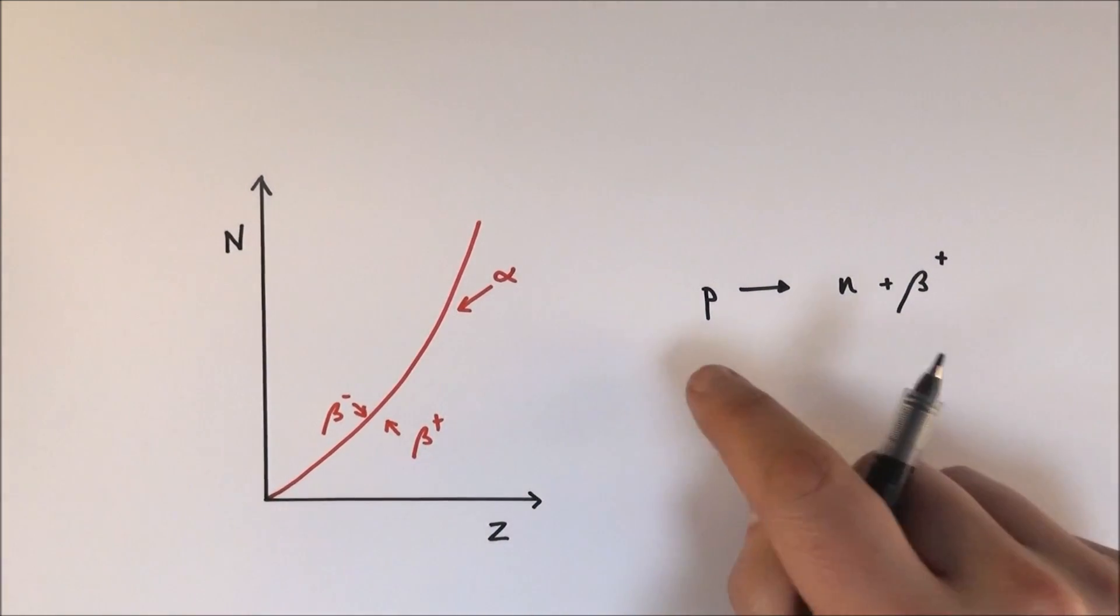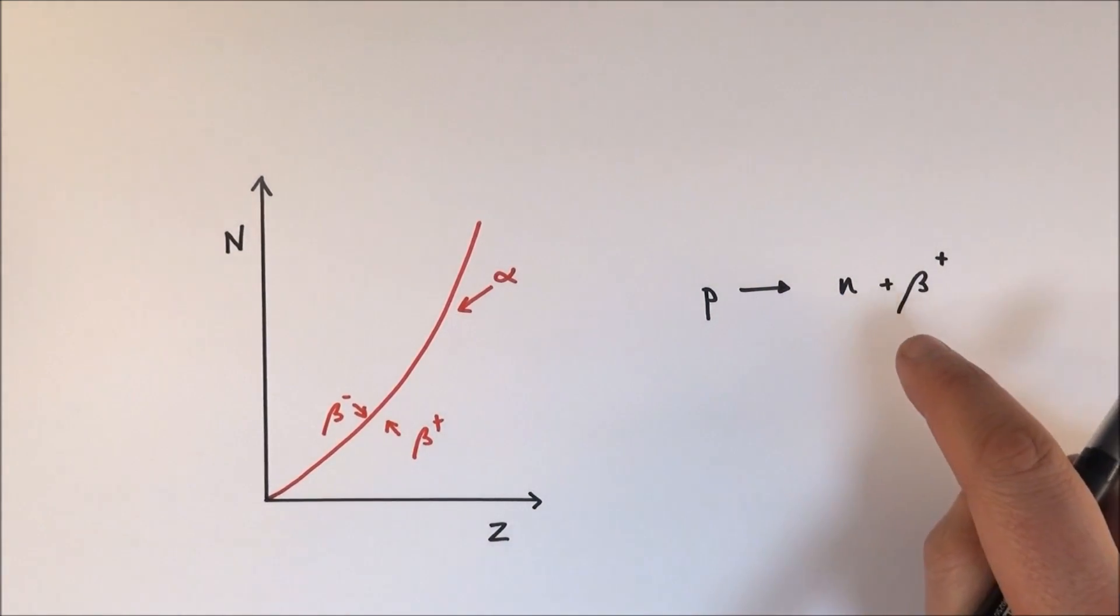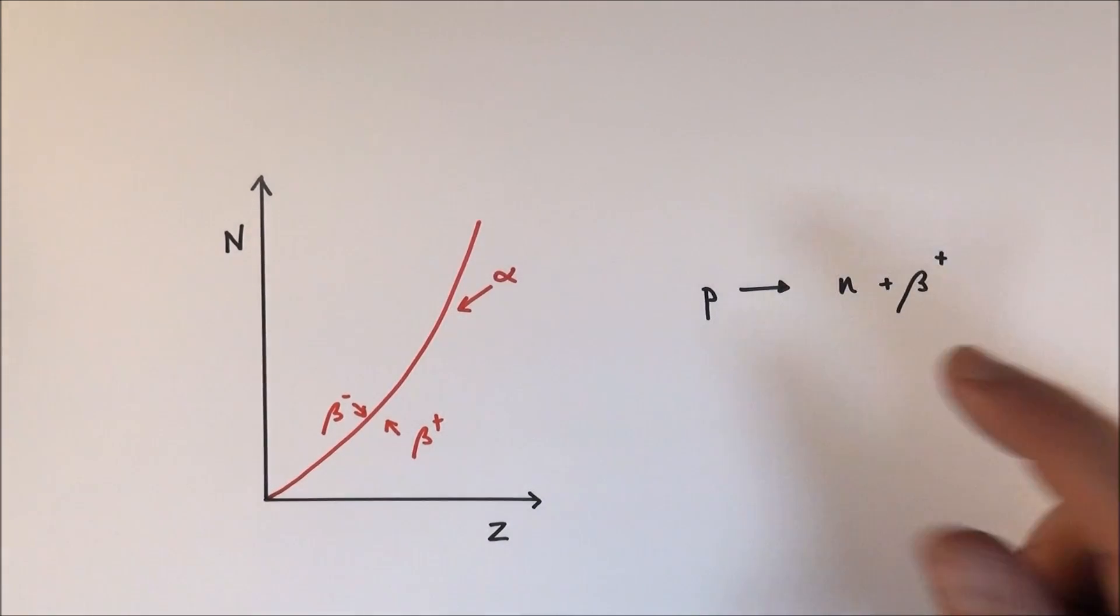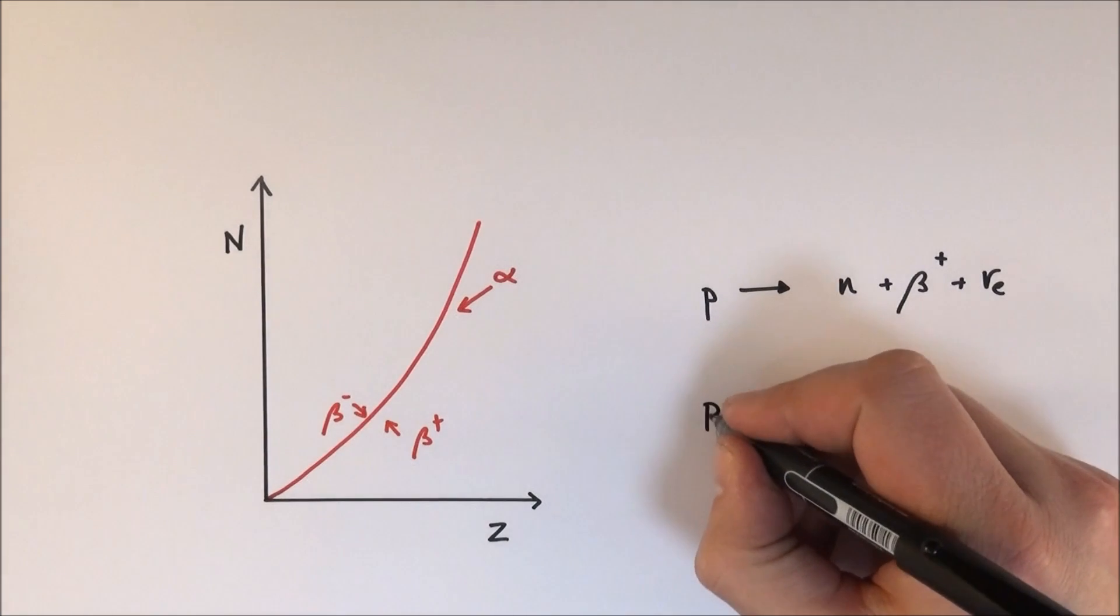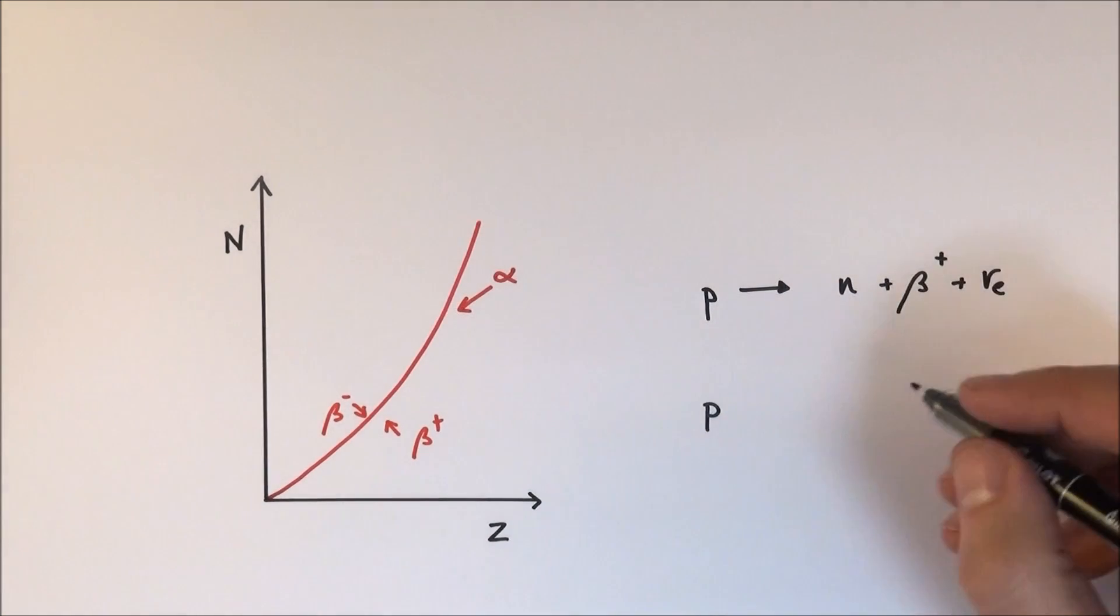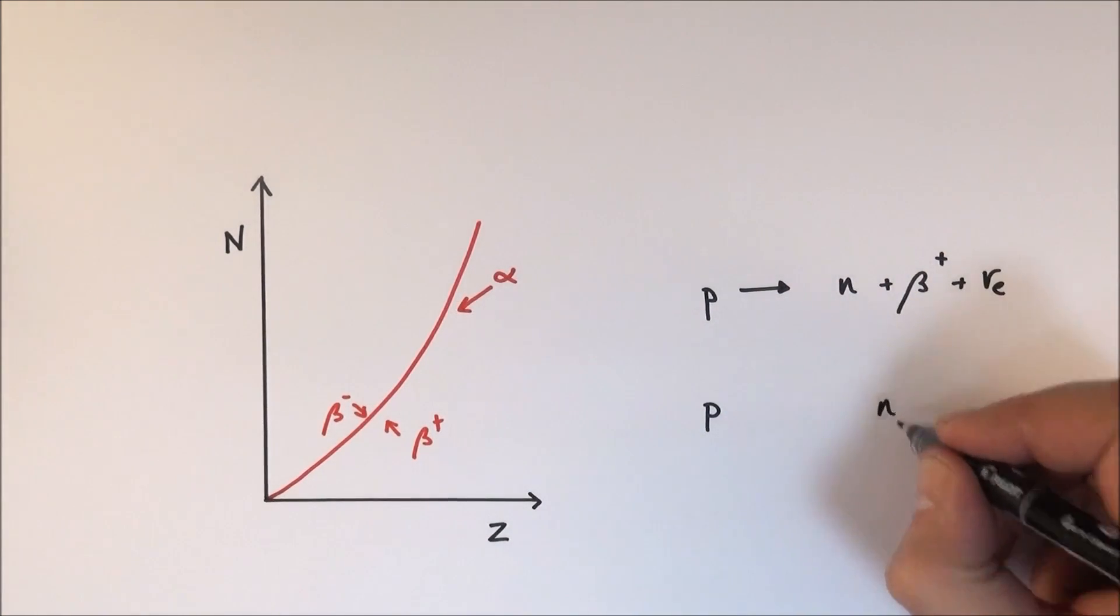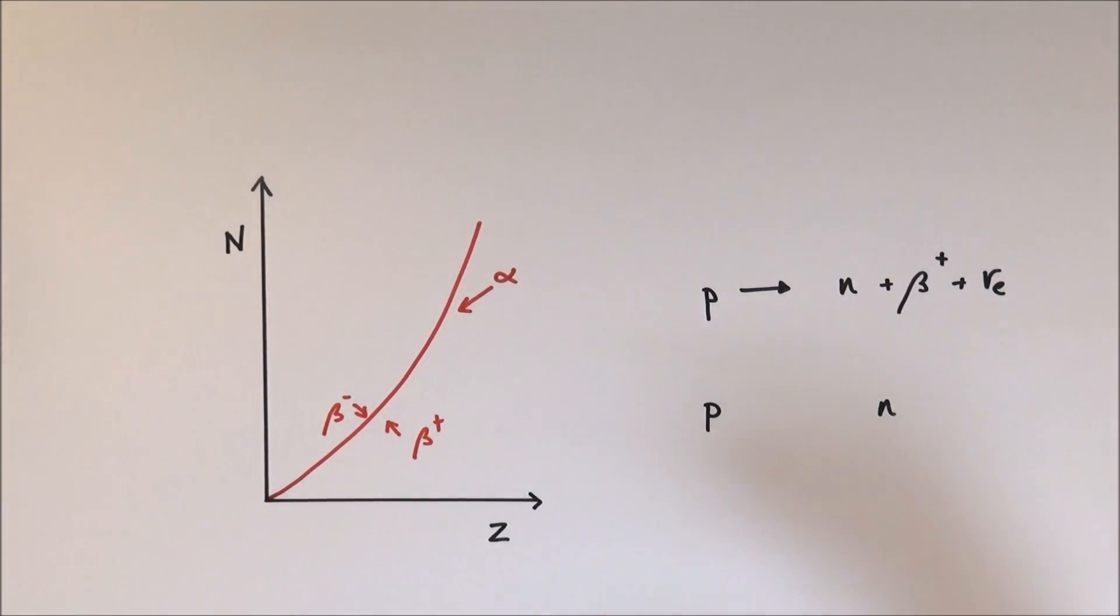When we consider the lepton number, we've got zero, zero, and this one here has got a lepton number of minus one because it's an antiparticle. So there has to be another lepton which is emitted, which in this case is an electron neutrino. But there's one more way in which a proton can end up turning into a neutron, and that's by what we call K-capture or electron capture.